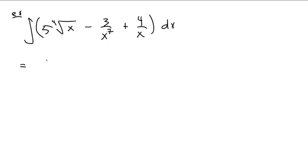What is this? Well, first of all, we write this as 5 times x to the one-fourth minus 3 times x to the negative 7 plus 4x to the negative 1 dx.